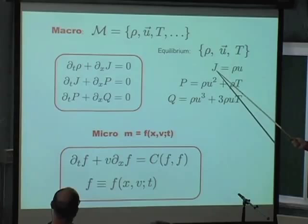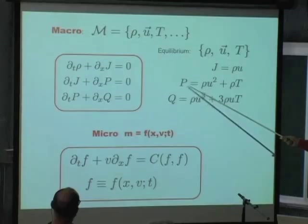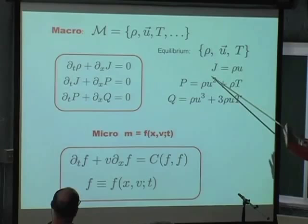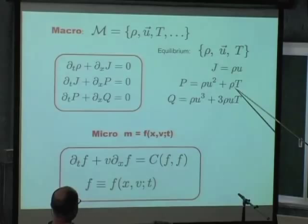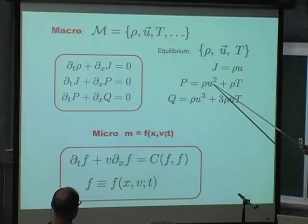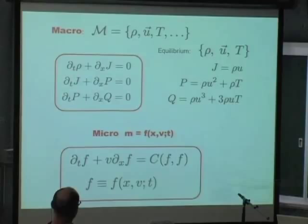In 1D they look like this. The current density is nothing but the density times the fluid speed. The pressure in 1D is a scalar — it's the part related to the macroscopic kinetic energy plus the thermal part. This is basically the pressure in an ideal gas, proportional to density and temperature. And so on and so forth. If you go to the heat flux, you have contributions like this.